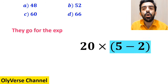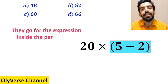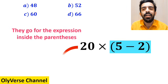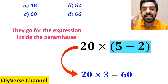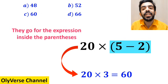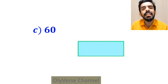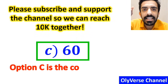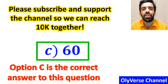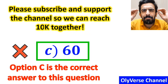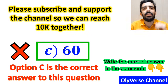As a final step, they handle the expression inside the parenthesis and replace it with 20 times 3, which gives them the answer 60. Without any hesitation, they say that option C is the correct answer. However, this answer is absolutely wrong.